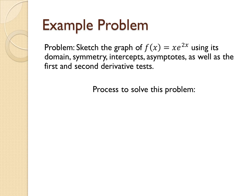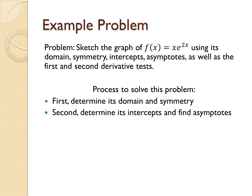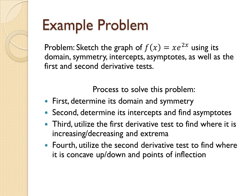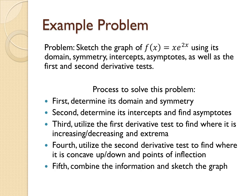The process to solve this problem is: first, determine its domain and symmetry; second, determine the function's intercepts and find its asymptotes; third, utilize the first derivative test to identify the open intervals over which the function is increasing or decreasing and locate extrema; fourth, utilize the second derivative test to identify the open intervals over which the function is concave up or down and locate points of inflection; fifth, combine all of this information and sketch the graph.